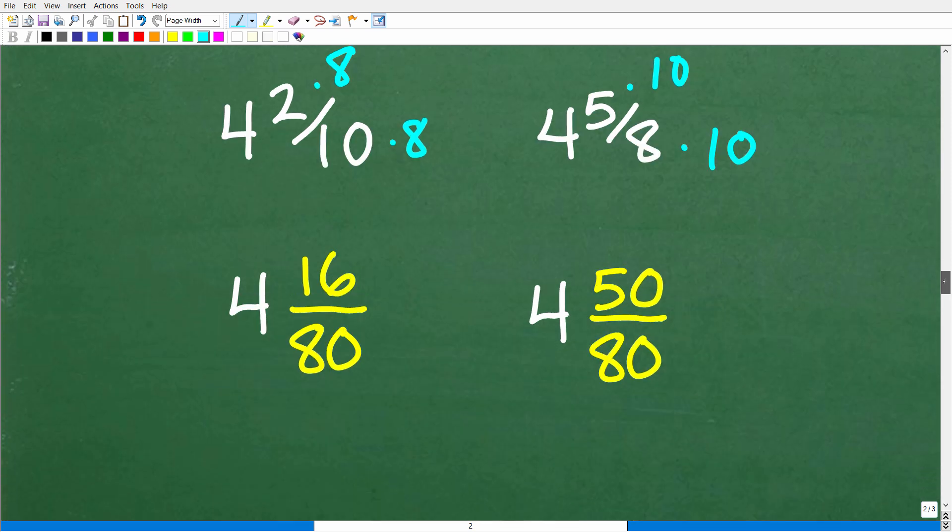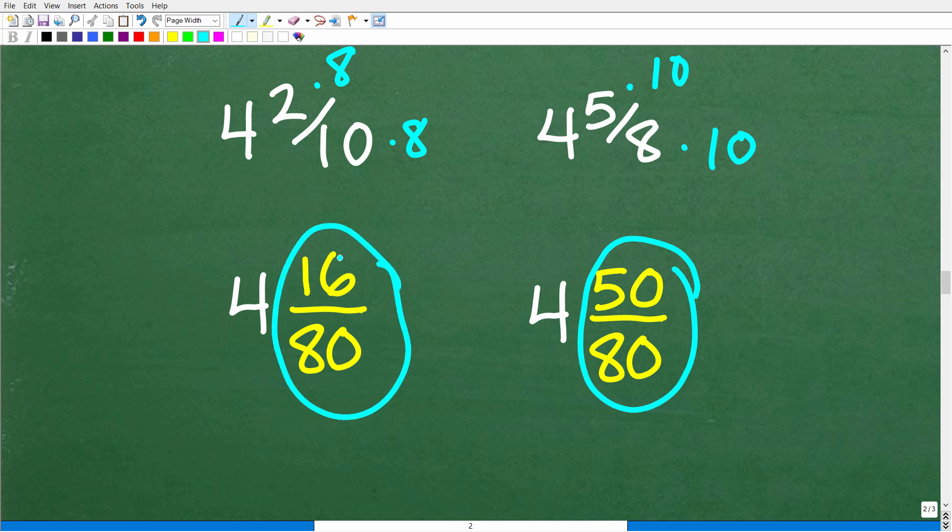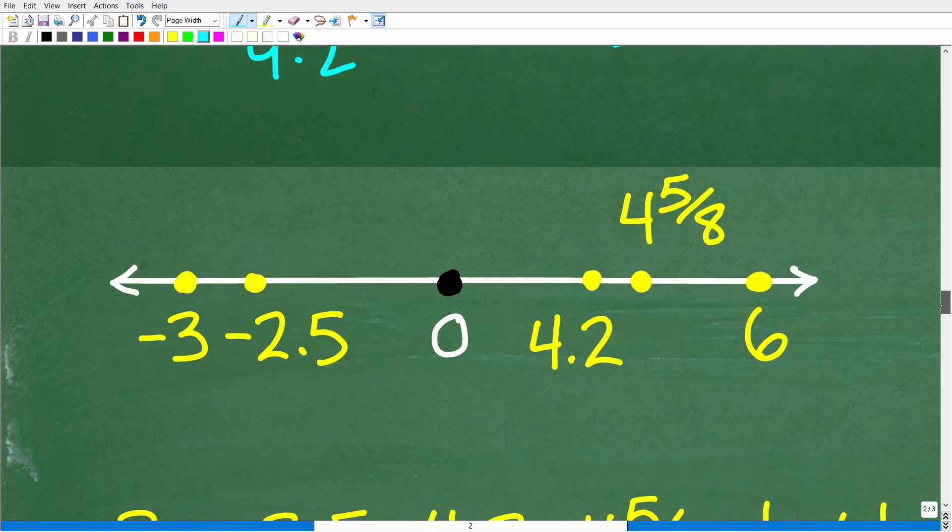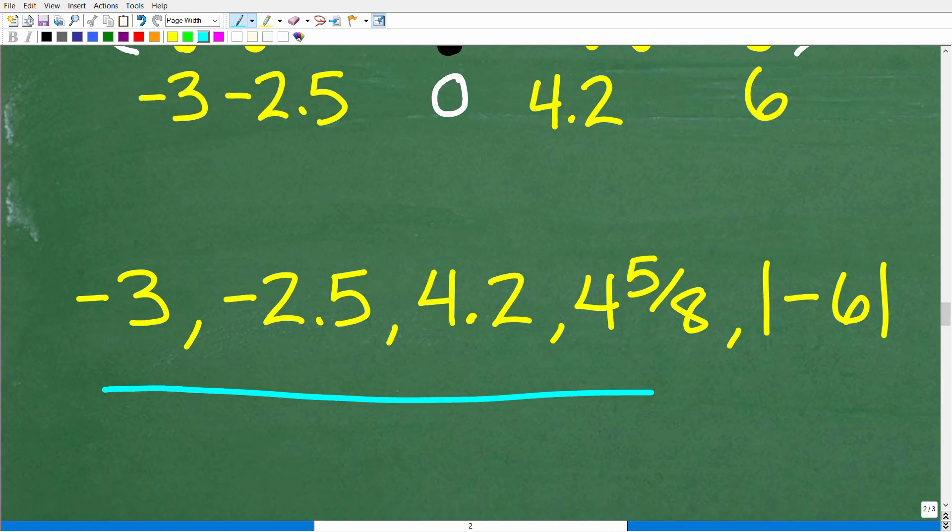So let's kind of take a look here. All right. So when we do this, we have 4 and 16 over 80 and 50 over 80. But we're really comparing these two parts. Okay. So which is the greater value? Well, this is the greater value. So 4 and 16 over 80, which, of course, is 4.2, is smaller than 4 and 5 eighths. All right. So we can just go ahead and finish up the problem. And here we go. So we have 4.2. Remember, it's going to be to the left of 4 and 5 eighths because it's a smaller value. And then we have 4 and 5 eighths. So here is our final answer.